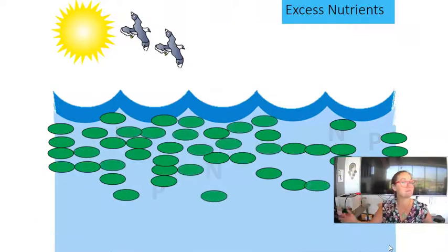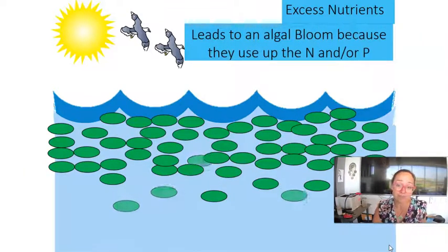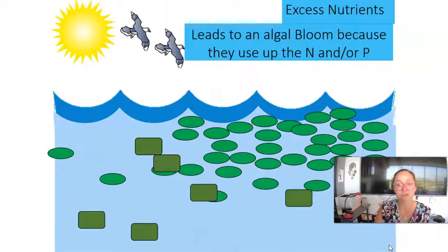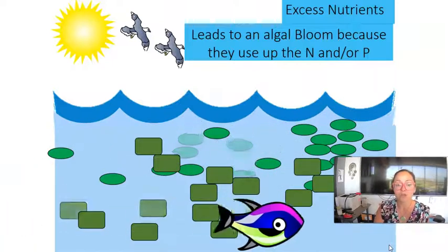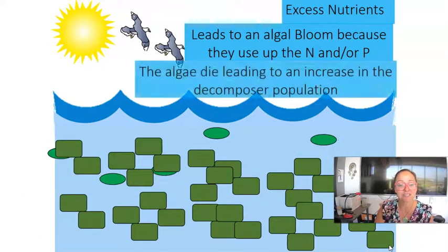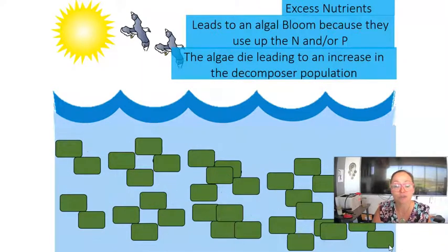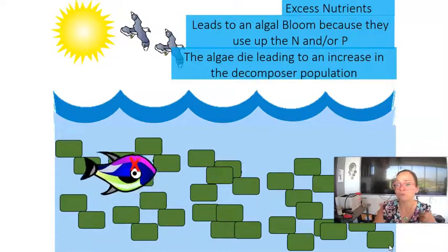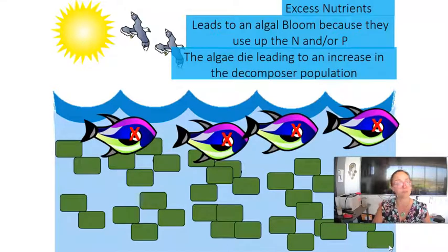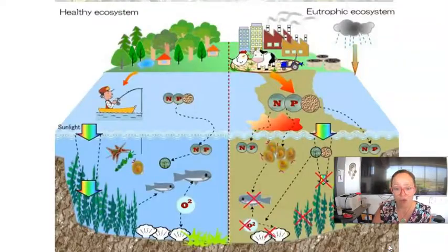The phytoplankton population grows and grows because it has unlimited resources. Eventually those nutrients get used up and the phytoplankton begin to die. This is where decomposers — aerobic decomposers — come into play. They undergo exponential growth and consume all of the oxygen in the water. By consuming the dissolved oxygen, they cause the death of other species because there isn't enough oxygen to support life.